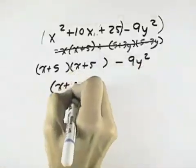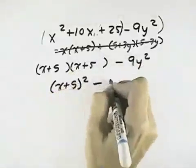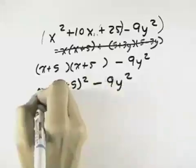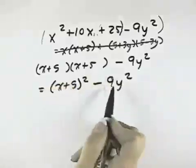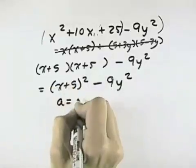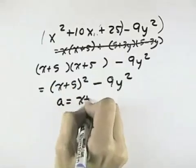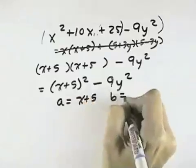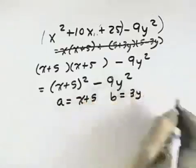But the only way we'd recognize that helps is if we write it as x plus 5 quantity squared minus 9y squared, because now we can see we have the difference of two squares. The square root of the first term is x plus 5, so that's our a. The square root of the second term is 3y, that's our b.